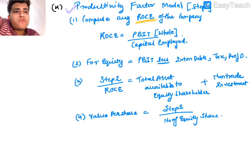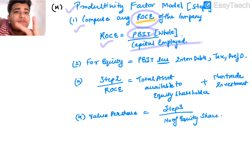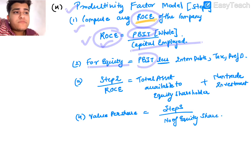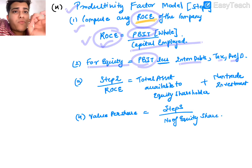For the productivity factor method, step one is to compute return on capital employed (ROCE): ROCE = PBIT (profit before interest and tax) divided by capital employed. Capital employed includes equity, debt, and preference shareholders. Step two: for equity shareholders, start with PBIT then deduct interest on debt, tax, and preference dividend to arrive at pure profit belonging to equity shareholders.